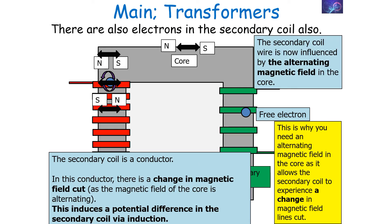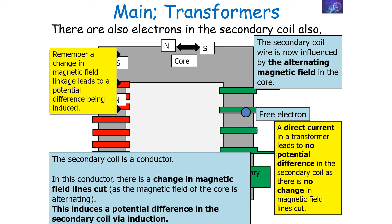The secondary coil wire is influenced by the alternating magnetic field in the core. That's why you need an alternating magnetic field — it allows the secondary coil to experience a change in how many magnetic field lines are cutting through it. A direct current in a transformer would lead to no potential difference in the secondary coil, because there would be no change in how many magnetic field lines pass through it — they would stay constant. You need a change in how many field lines pass through a conductor to produce a potential difference.